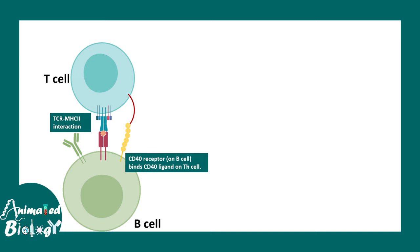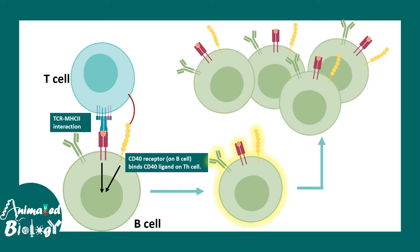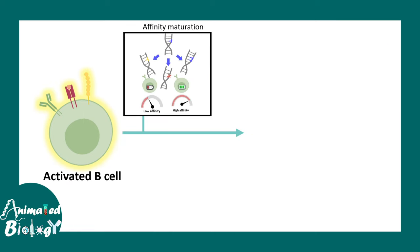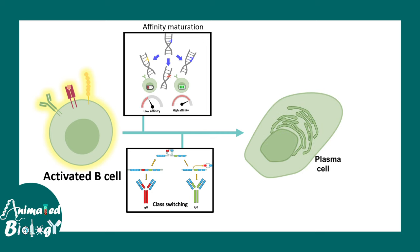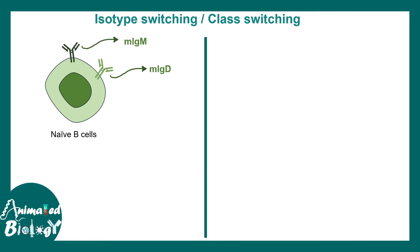T cells activate B cells through specific interactions like TCR-MHC and CD40-CD40 ligand interactions. Once activated, a B cell proliferates, then undergoes affinity maturation, somatic hypermutation, and class switching, ultimately differentiating into plasma cells that produce specific antibody subclasses. Class switching is triggered by interleukin signaling.